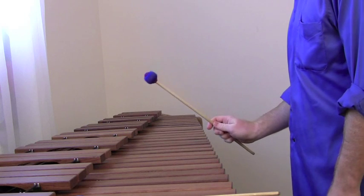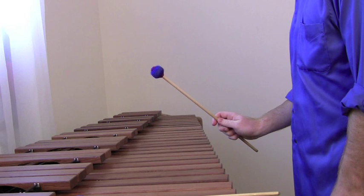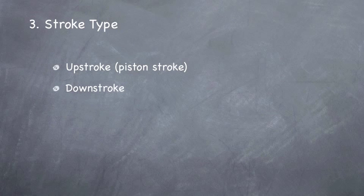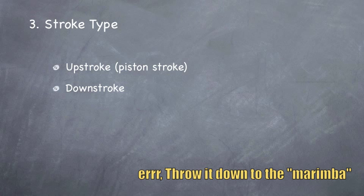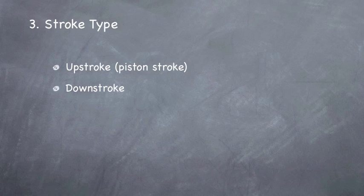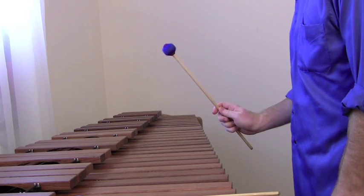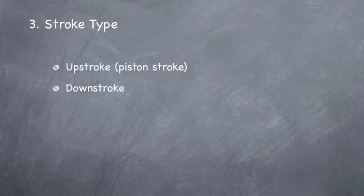Okay, number three, stroke type. This has been kind of a controversy, but we have a few really good scientific studies that have come out recently that kind of put some myths here to rest. So I'm just going to talk about a few basic kinds of strokes. I'm going to talk about the upstroke, also known as the piston stroke, which is where you take the mallet at an elevated position, you hit the bar and then you come right back up to that same position. And then we have the downstroke commonly used on a snare drum, which is where you take the mallet in an up position and then you throw it down to the mallet, it rebounds maybe an inch and then you stop. That's called a downstroke. Now a lot of people think that these change the sound of the marimba if you use one versus the other, but I'm not entirely convinced.